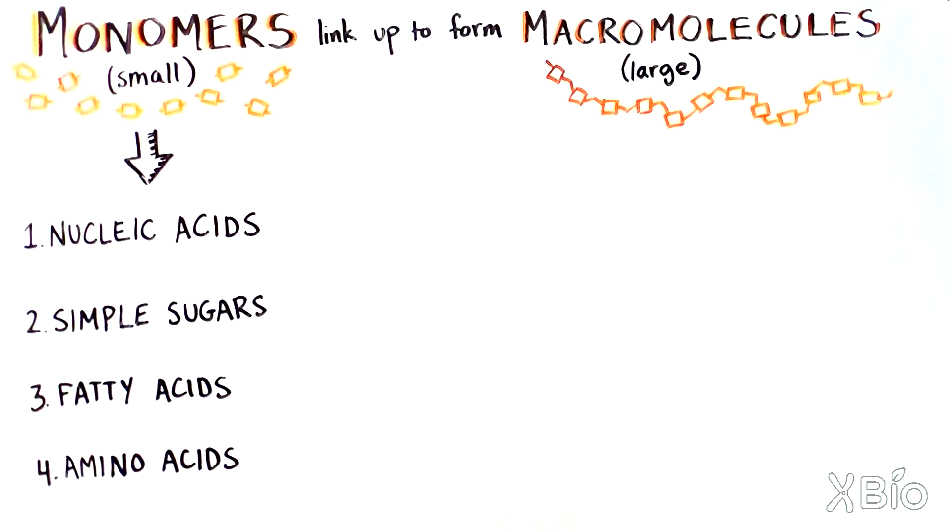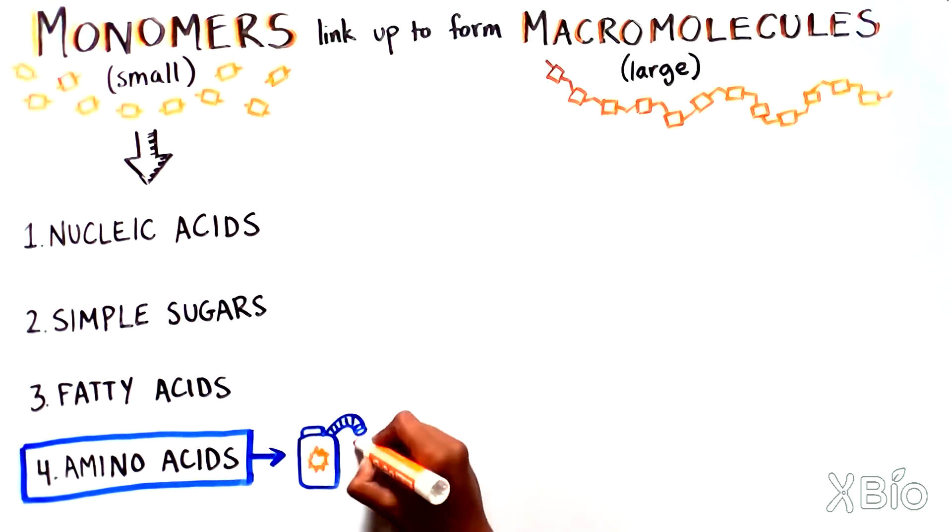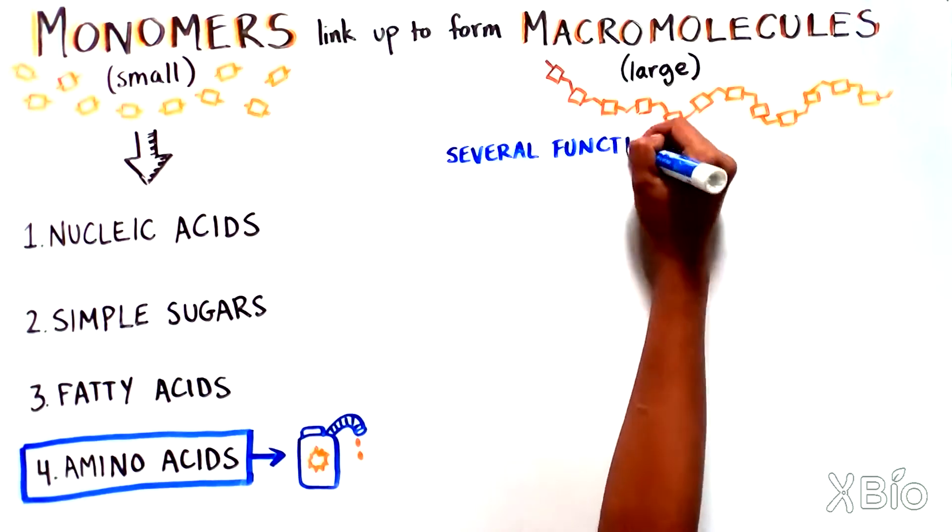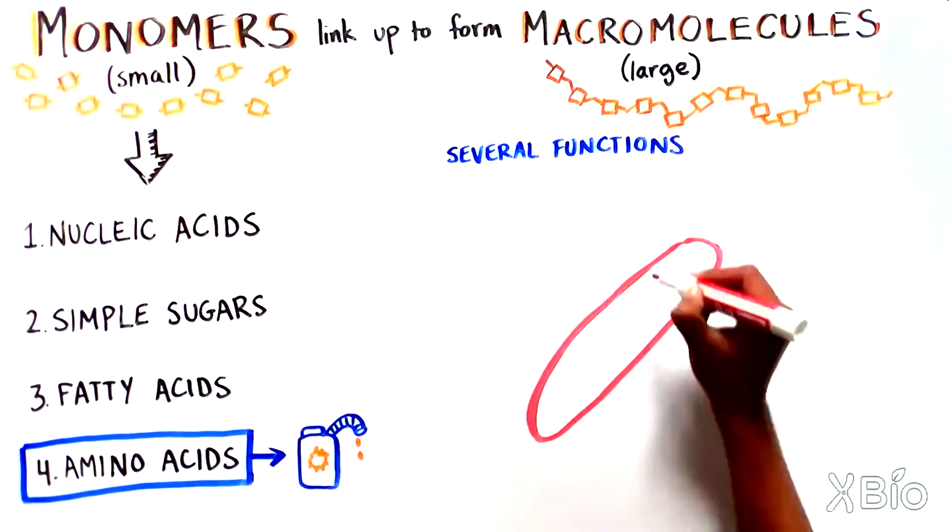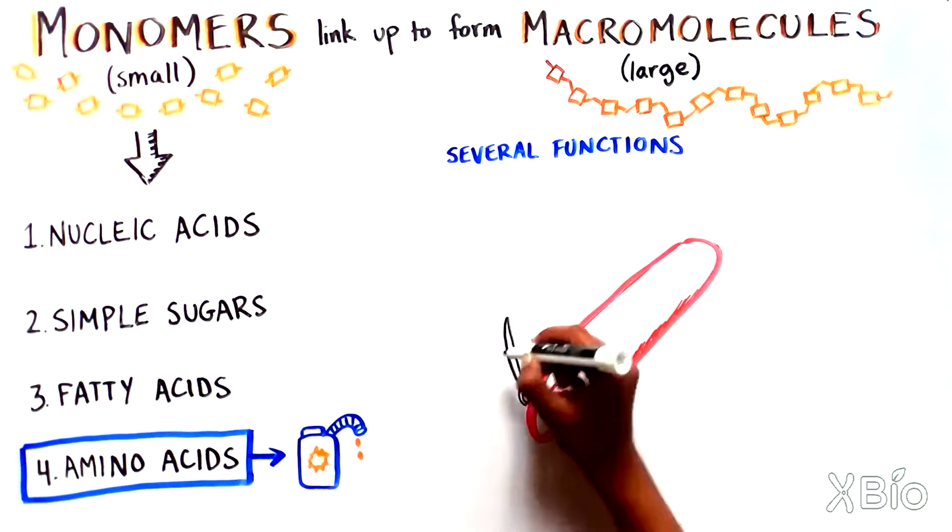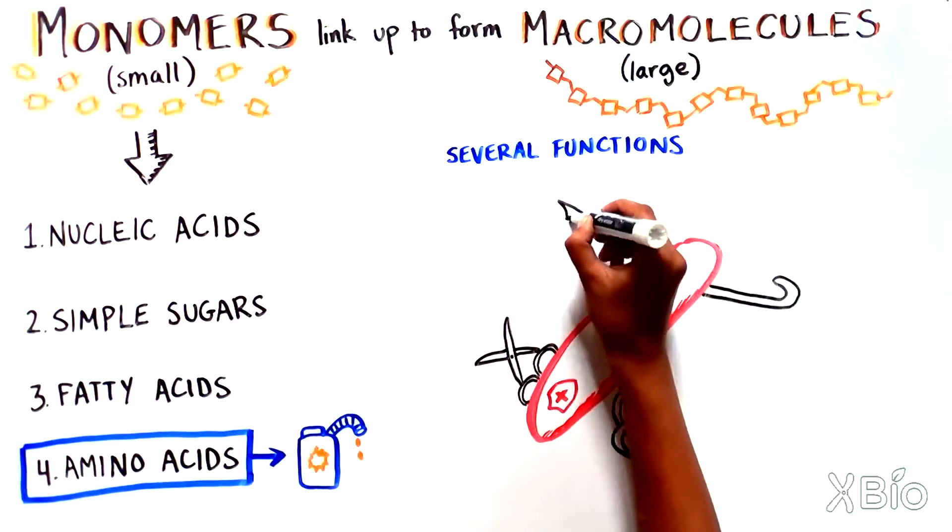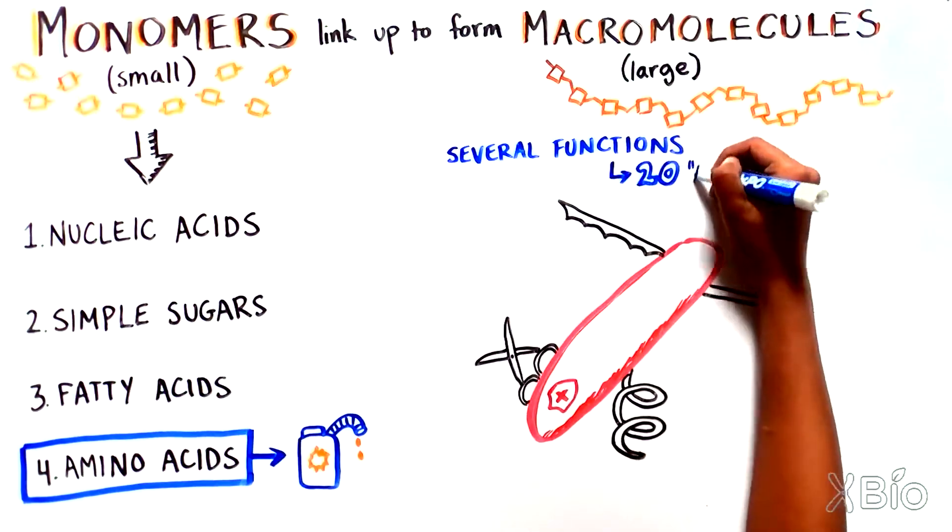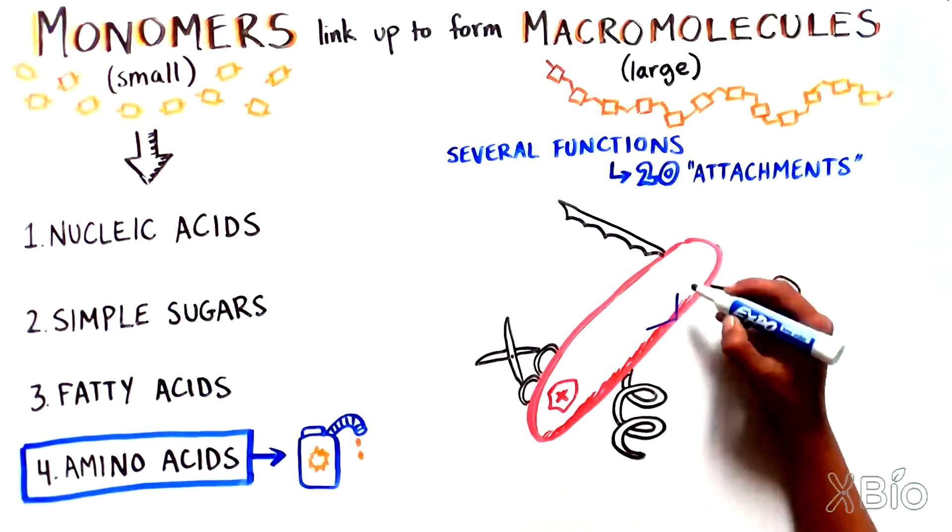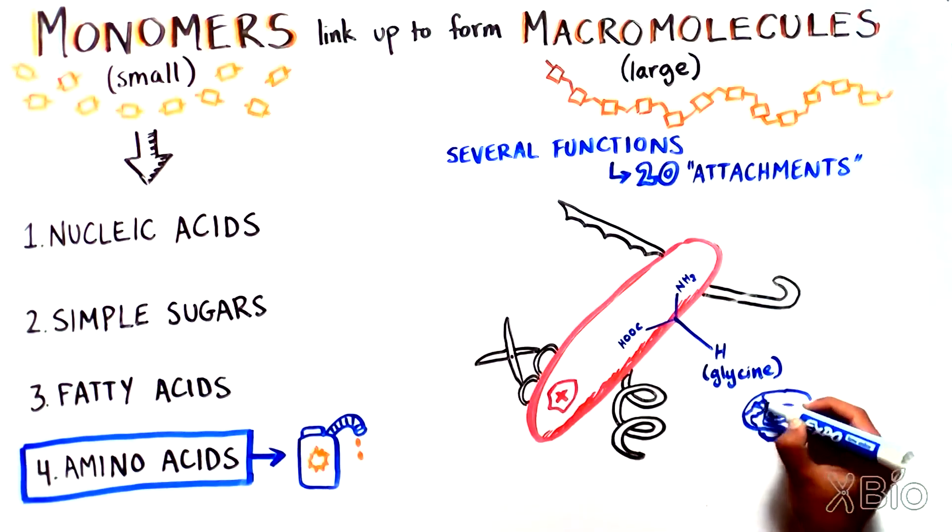Like sugars and fatty acids, amino acids are another type of small molecule that can be further broken down for use as fuel. But they have several other important functions as well. You can think of amino acids as the Swiss army knife of the small molecules. Each has the same basic structure, but then has one of 20 possible attachments coming off of the main structure. Each attachment has different properties, so different amino acids can be used for diverse roles.